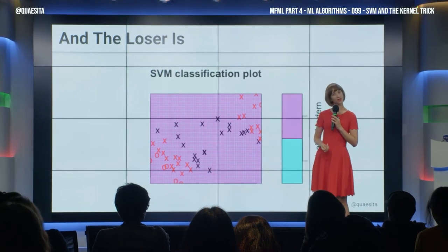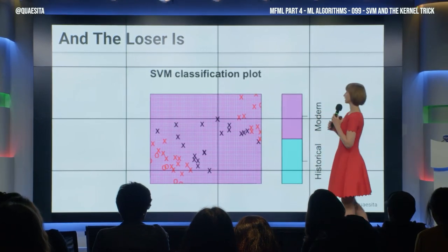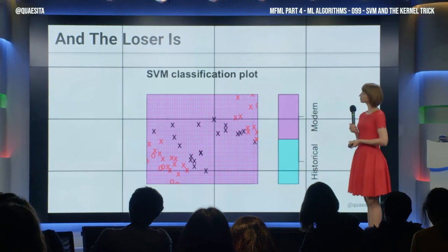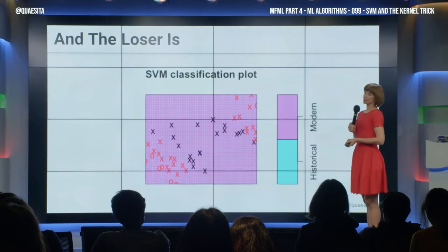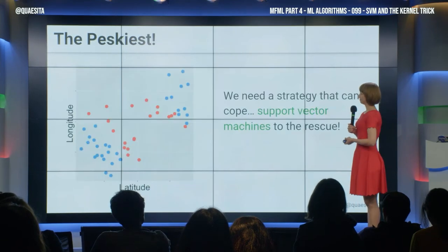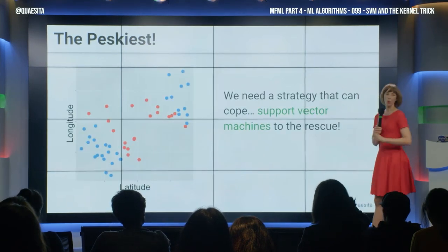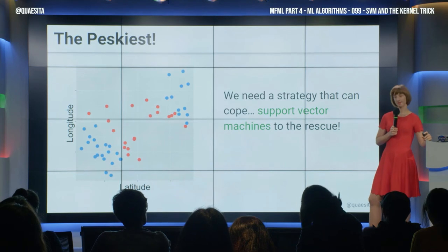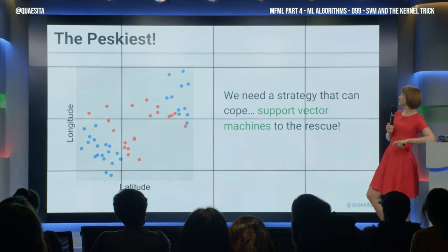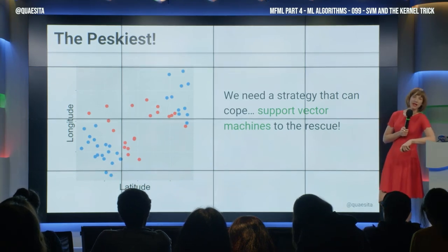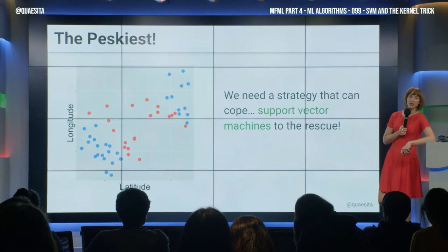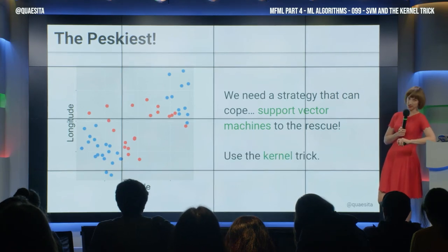That's a little better than calling everything historical and be done with it. Can we do better? We want one more upgrade to support vector machines. And what we will rely on is called the kernel trick.